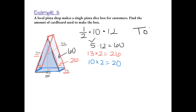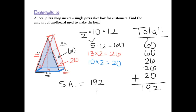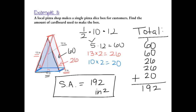To find the total surface area of the cardboard box, we add 60 twice for the triangles in the front and back, 26 twice for the rectangles on the sides, and 20 once for the rectangle on the bottom. 6 plus 6 is 12, then 12, 14, 16, 18, plus one more is 19. So the surface area of the box is 192 inches squared — they needed 192 square inches of cardboard.